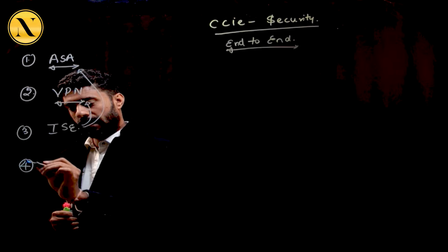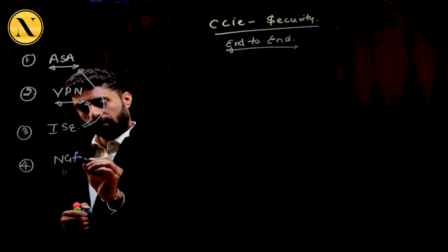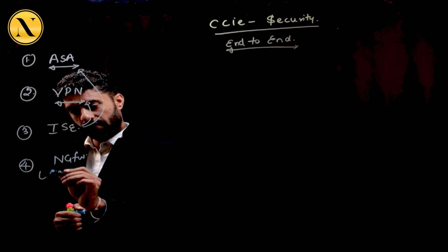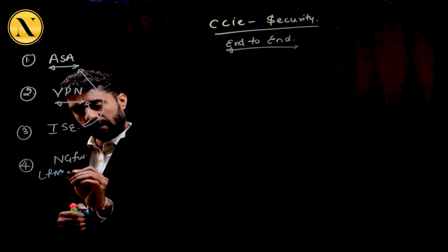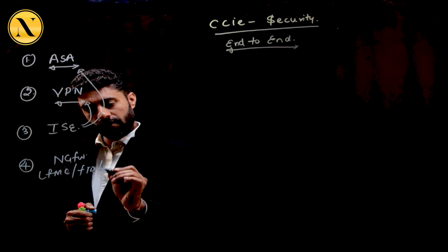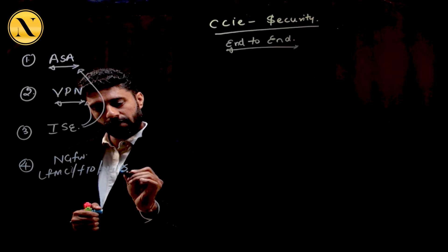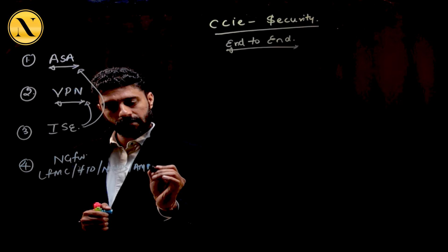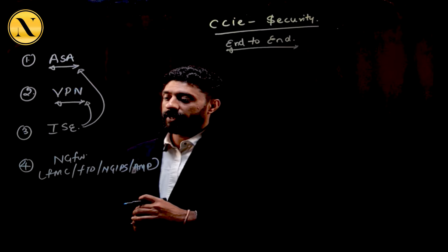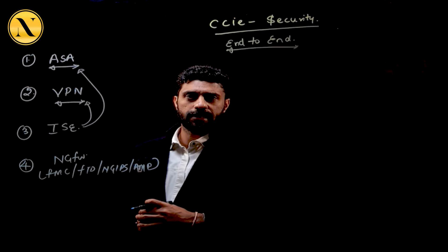The fourth module is the Next Generation Firewall. This is Cisco's next generation firewall, so here we'll be talking about the FMC, FTD, NG IPS, and AMP. These four components will be covered in detail under the Next Generation Firewall module.